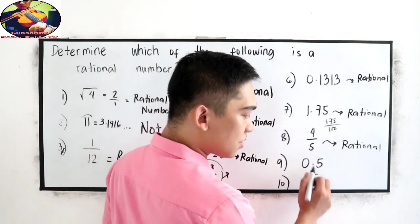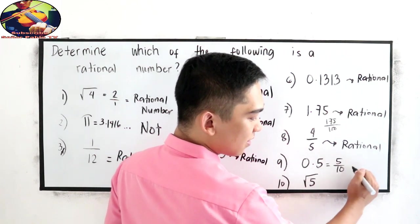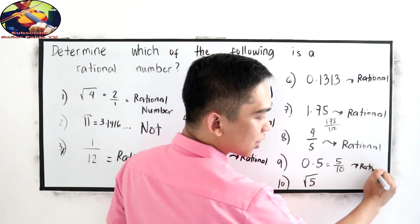Number 9, 0.5, it is equal to 5 over 10. So, it is a rational number.